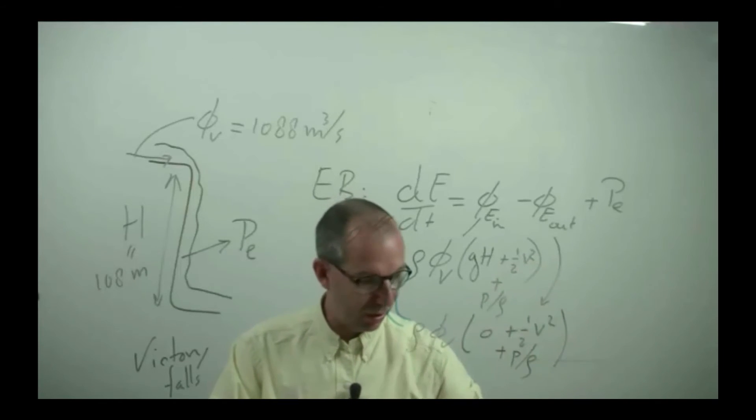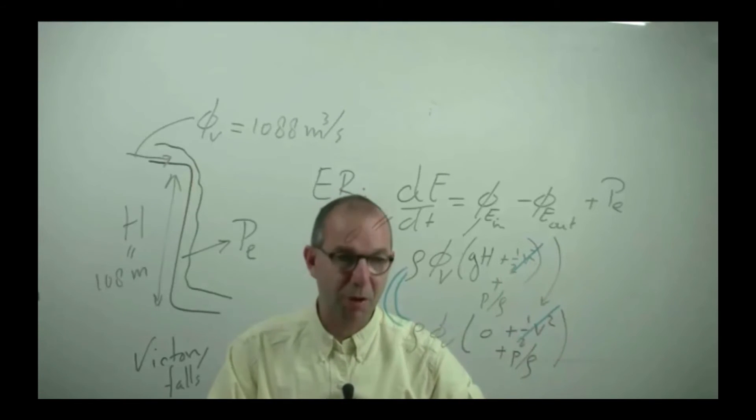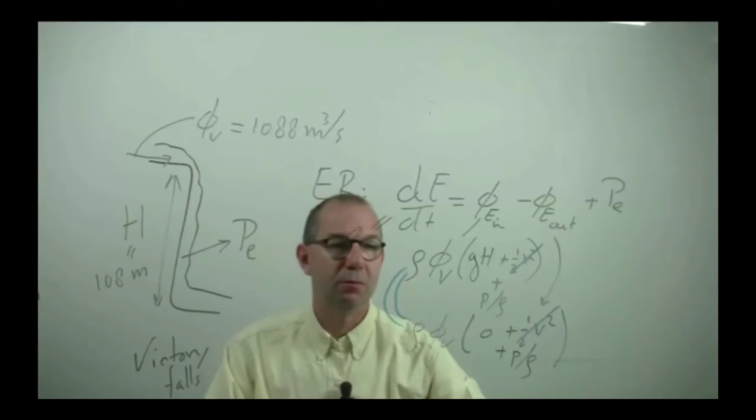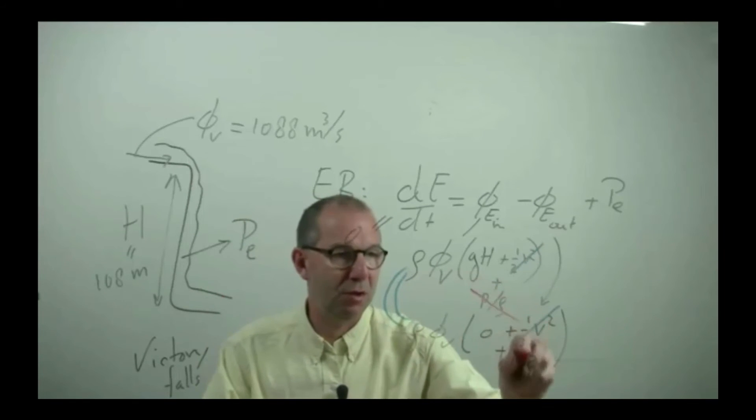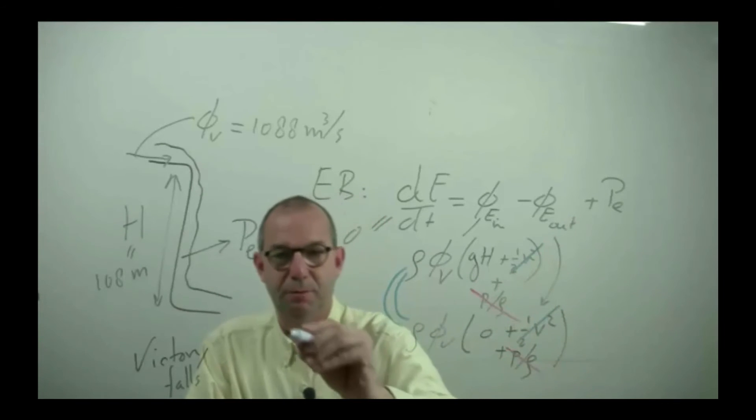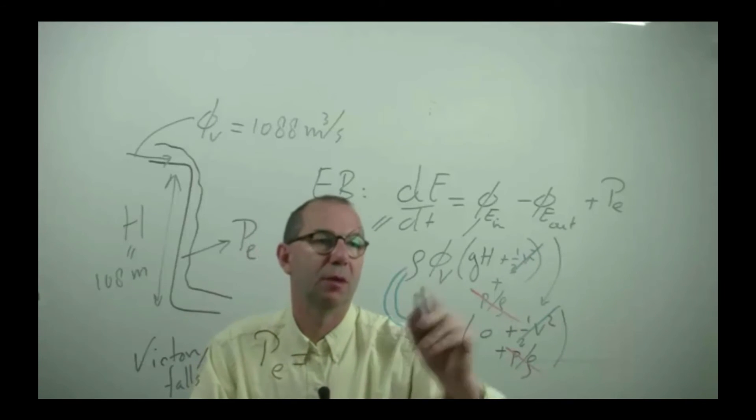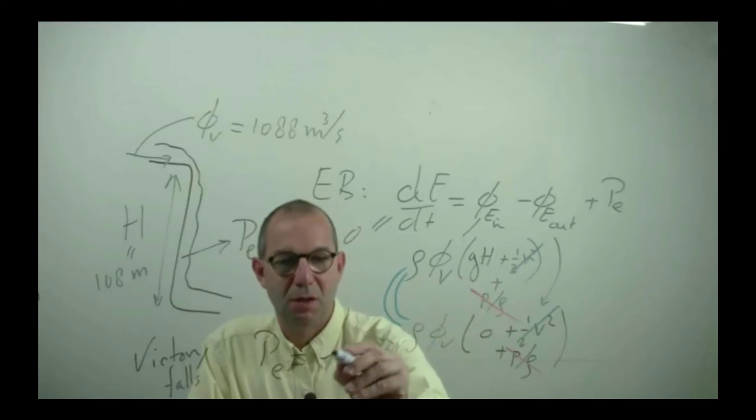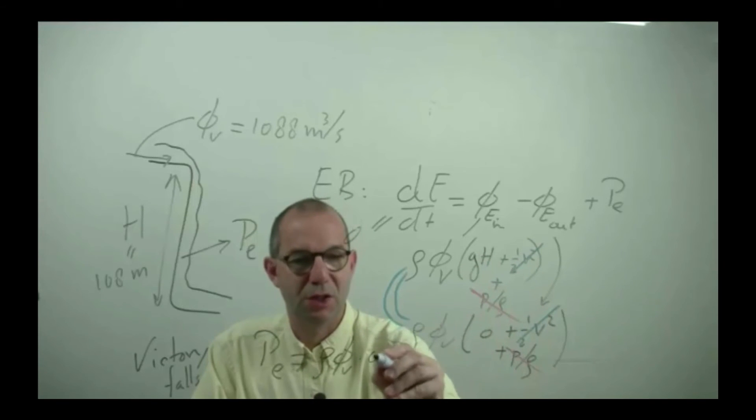And it has pressure energy. This one, let me use another color, can be scratched out against that one. What about the pressure? Well, both are at atmospheric pressure. It's an open fold. So the pressure here is atmospheric, the pressure here is atmospheric. So these can be scratched out. And what I'm left with is that the production of energy that you could maximally get if everything is converted is the mass flow rate, which is the density of water times the volume flow rate times the difference in potential energy is GH.